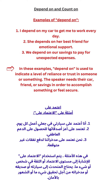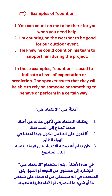In these examples, 'depend on' is used to indicate a level of reliance or trust in someone or something. The speaker needs their car, friend, or savings in order to accomplish something or feel secure. Examples of 'count on': you can count on me to be there for you when you need help.